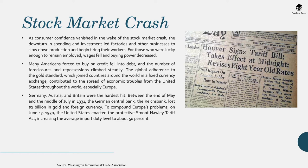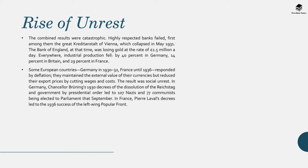Germany, Austria and Britain were the hardest hit. Between the end of May and the middle of July 1931, the German central bank — the Reich Bank — lost $2 billion in gold and foreign currency. On June 17th 1930, the US enacted the protective Smoot-Hawley Tariff Act, increasing the average import duty level to about 50%, leading to a rise in unrest. The combined results were catastrophic: highly respected banks across Europe failed, first among them the Credit Anstalt of Vienna, which collapsed in May 1931. The Bank of England lost gold at the rate of £2.5 million a day, and industrial production fell by 40% in Germany, 14% in Britain and 29% in France.